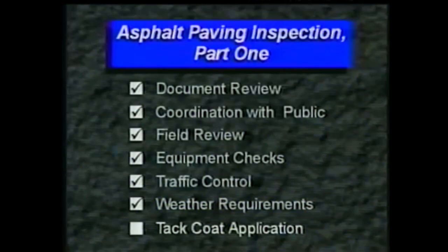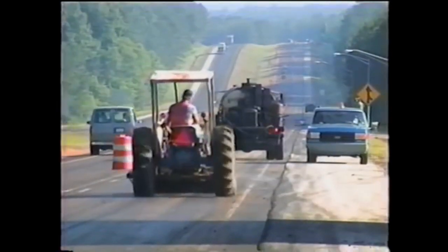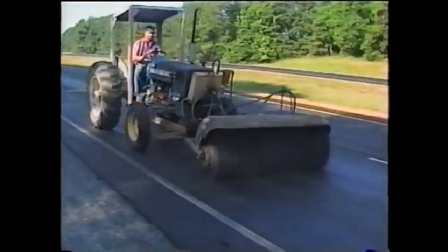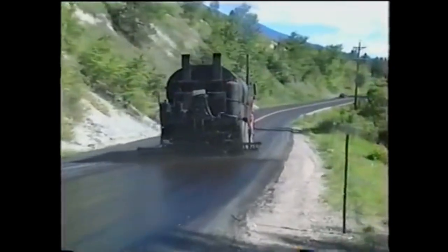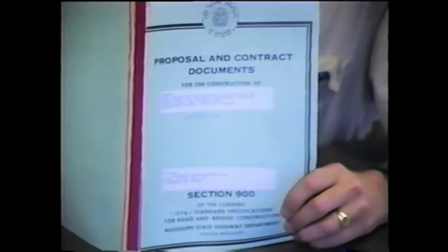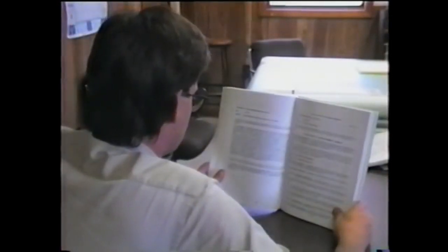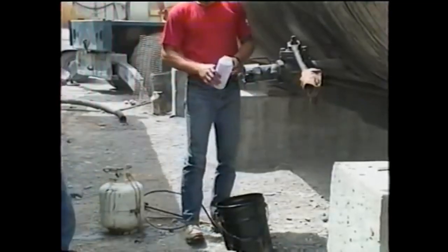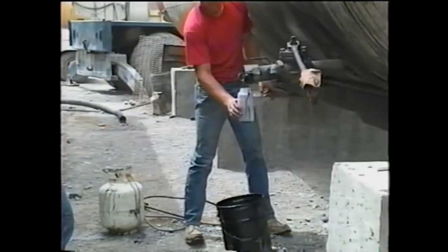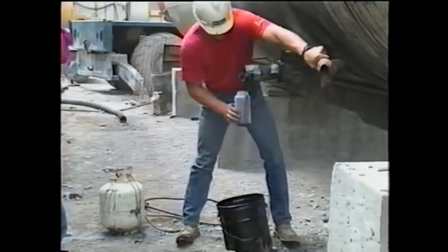Now we'll look at the last item on the list: the tack coat. The purpose of the tack coat is to bond the new pavement to the existing pavement. So first, it's very important to thoroughly clean the surface, and then cover it uniformly with the right amount of tack. To begin, check the contract documents to see what type of tack material is to be used. Most agencies require emulsions, but some use asphalt cement or cutback asphalt. As inspector, you may have to sample the tack. If so, be sure to follow your agency's procedures for collecting, documenting, and submitting the samples properly.